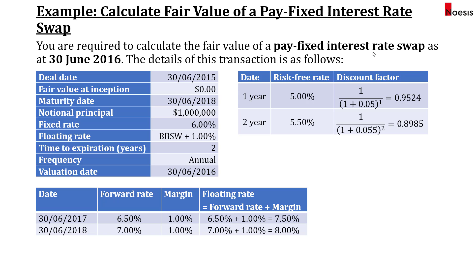A pay fixed interest rate swap means this swap involves paying a fixed rate and receiving a floating rate. The deal was struck on 30th June 2015 at a fair value of zero at inception and will mature in three years time. Notional principal is $1 million, fixed rate is 6%, floating rate is BBSW plus 1%, and it has two years to go until it expires. The payment frequency is annual and the valuation date is 30th June 2016, so there are only two years to go until it matures.